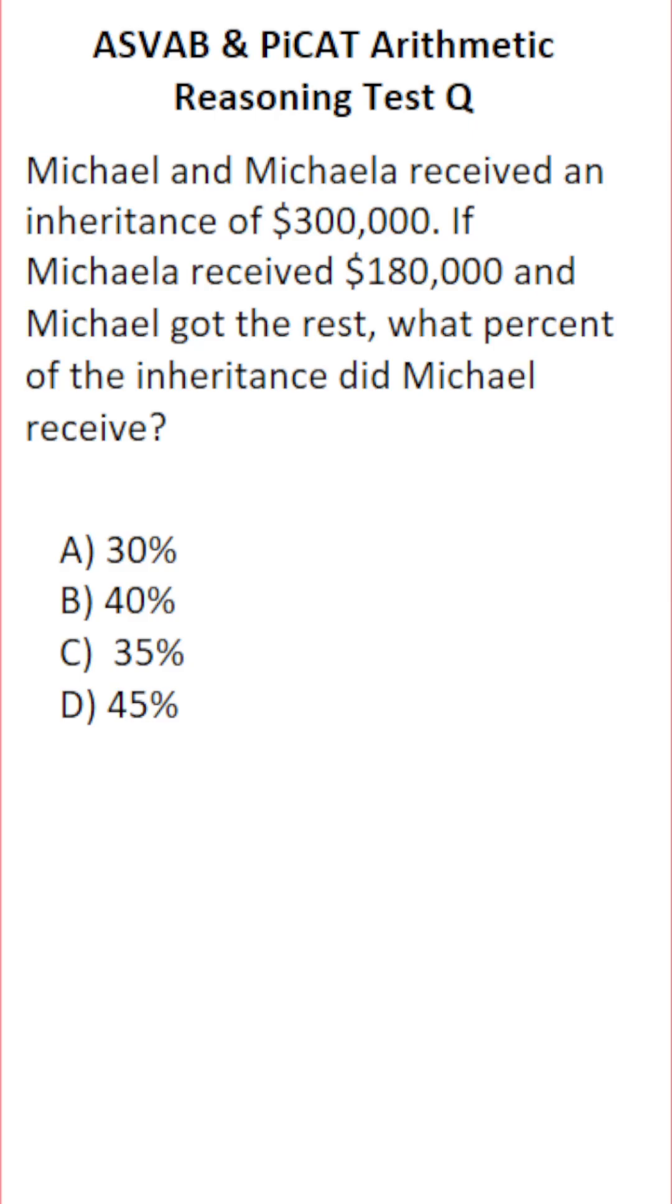This arithmetic reasoning practice test question for the ASVAB and PiCAT says: Michael and Michaela received an inheritance of $300,000. If Michaela received $180,000 and Michael got the rest, what percent of the inheritance did Michael receive?